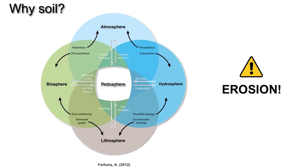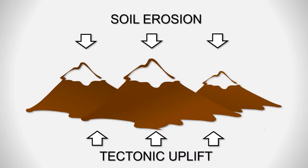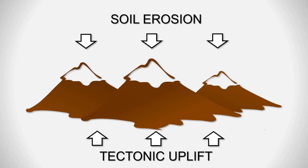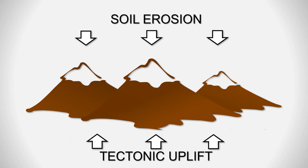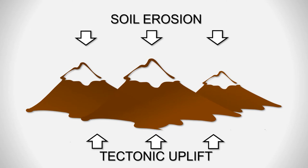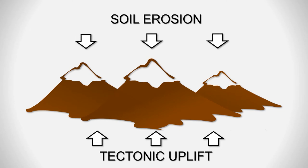Nowadays, one of the main problems threatening the functionality of the soil is erosion. Erosion is a gradual and dynamic geomorphological process that acts continuously over the terrestrial relief against tectonic uplift, flattening the surface to a more stable condition.